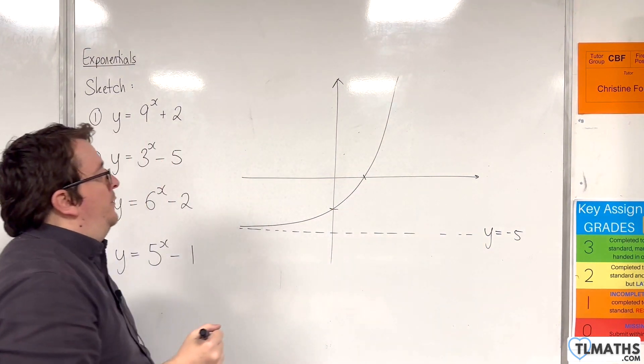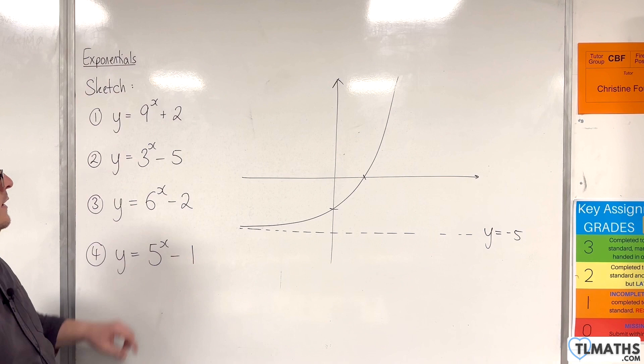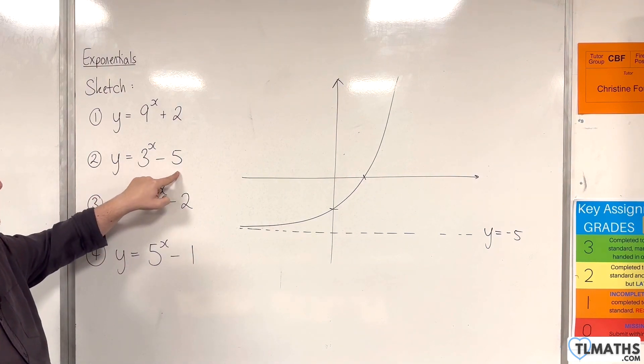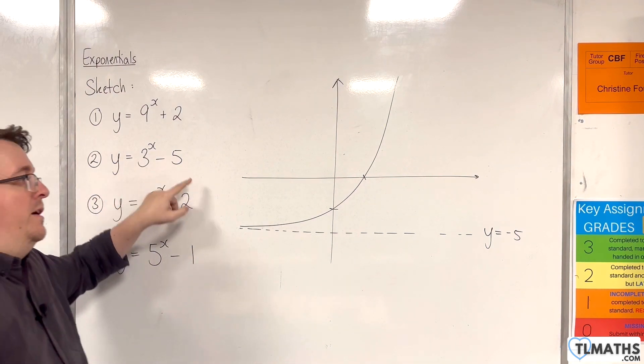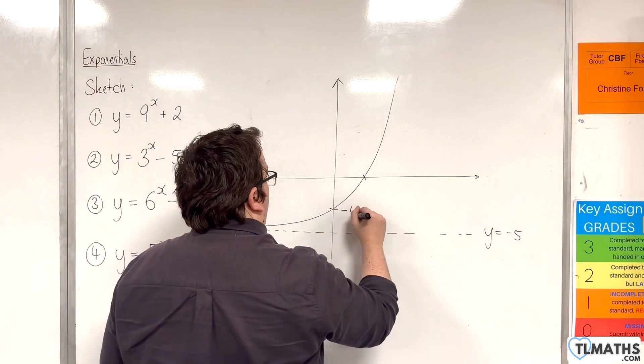And we'll pop on our sketch. There are two points of interest. Now where it crosses the y-axis will be 3 to the 0 take away 5. So 1 take away 5 is minus 4.